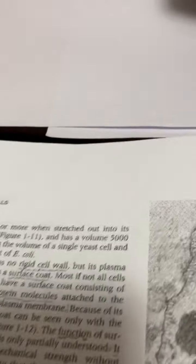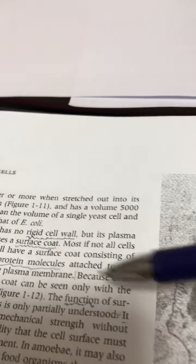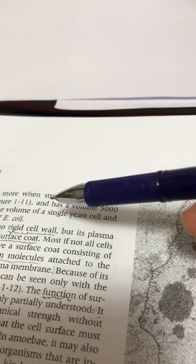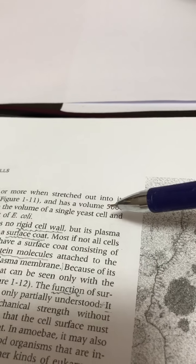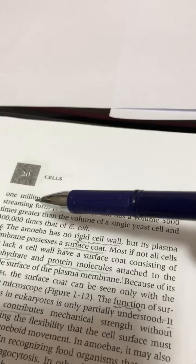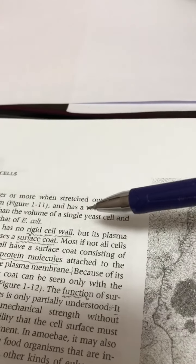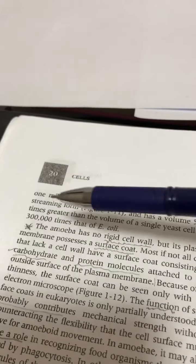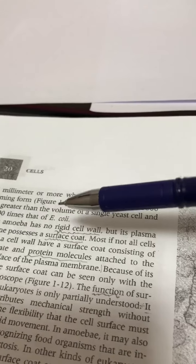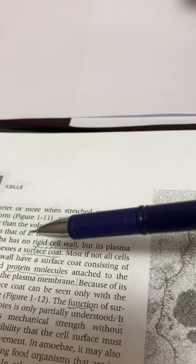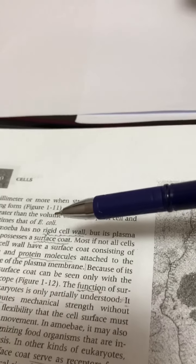If we compare the volume of amoeba with the volume of yeast, it's about 5,000 times greater than the volume of a single yeast, and 300,000 times the volume of E. coli.